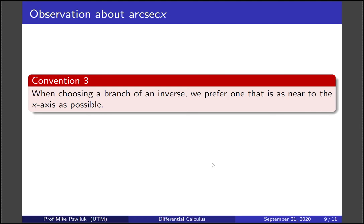When choosing a branch of an inverse, we prefer one that is as near to the x-axis as possible. Now these three conventions lead us to choosing most types of branches.